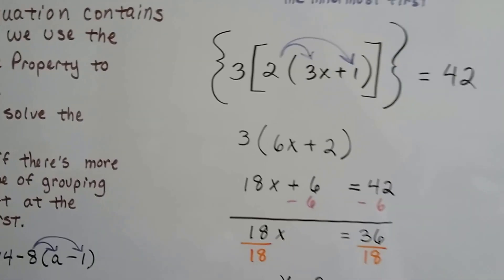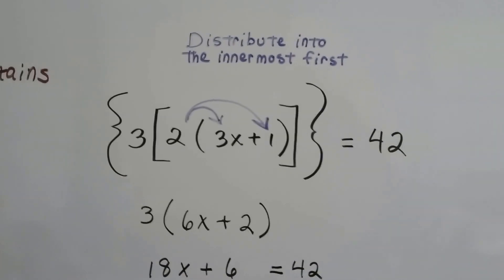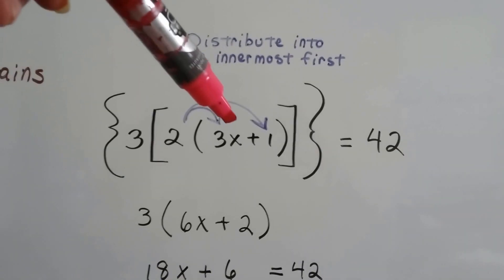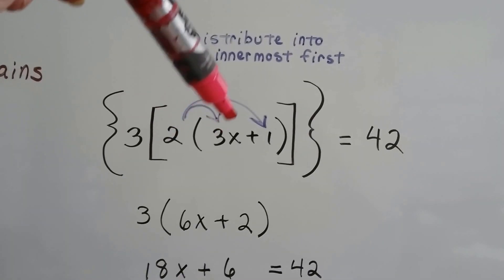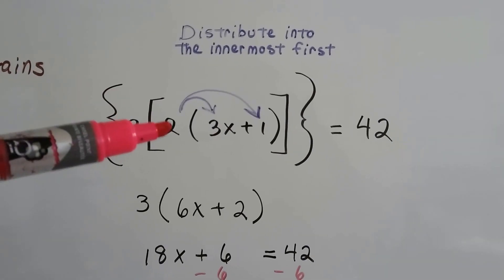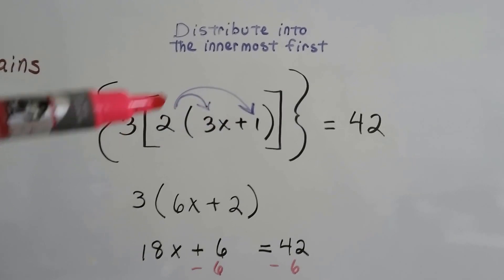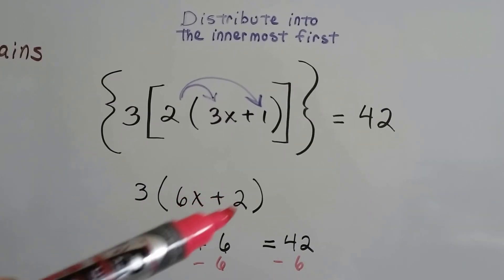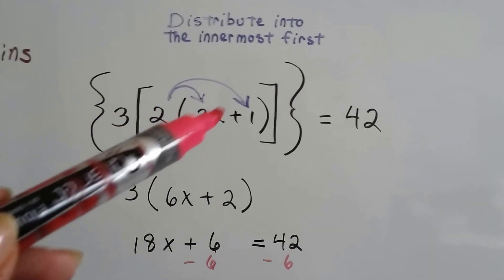When we're dealing with a lot of grouping symbols, we start with the innermost one first. So we're going to distribute this 2 into here first. We're going to get 6x plus 2 by distributing this innermost part.